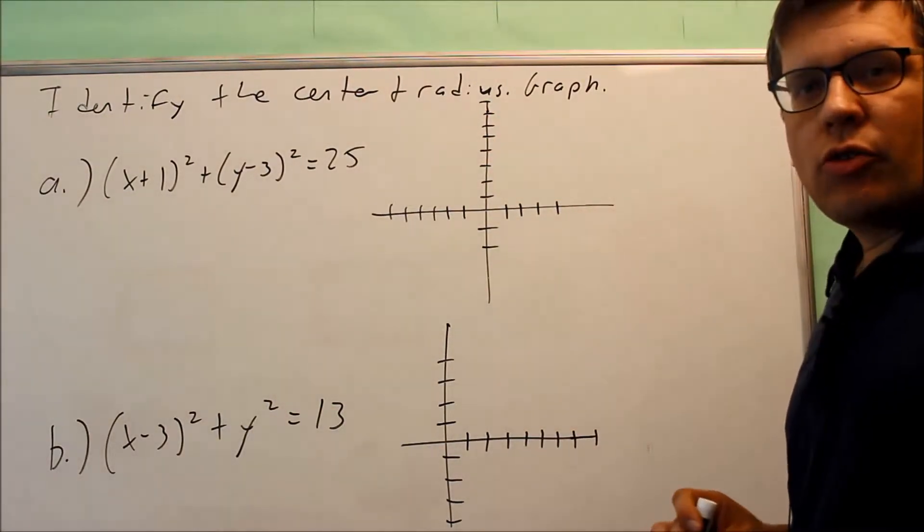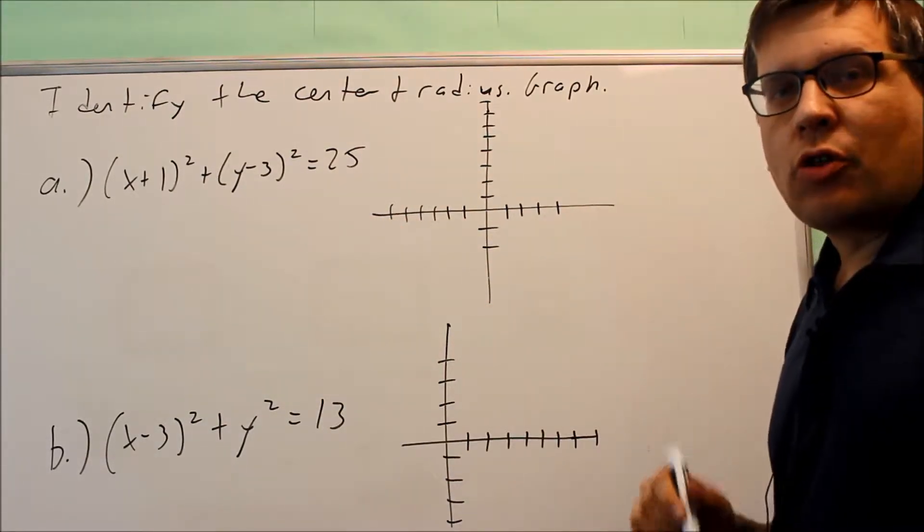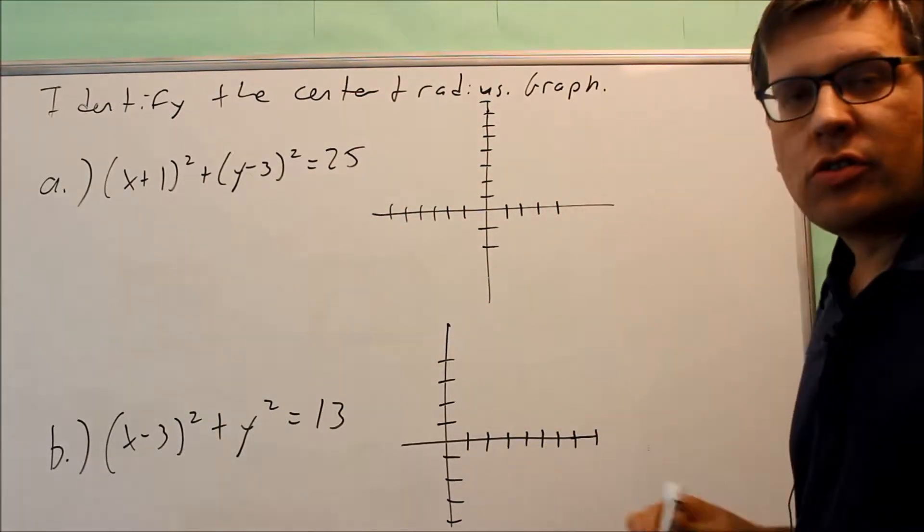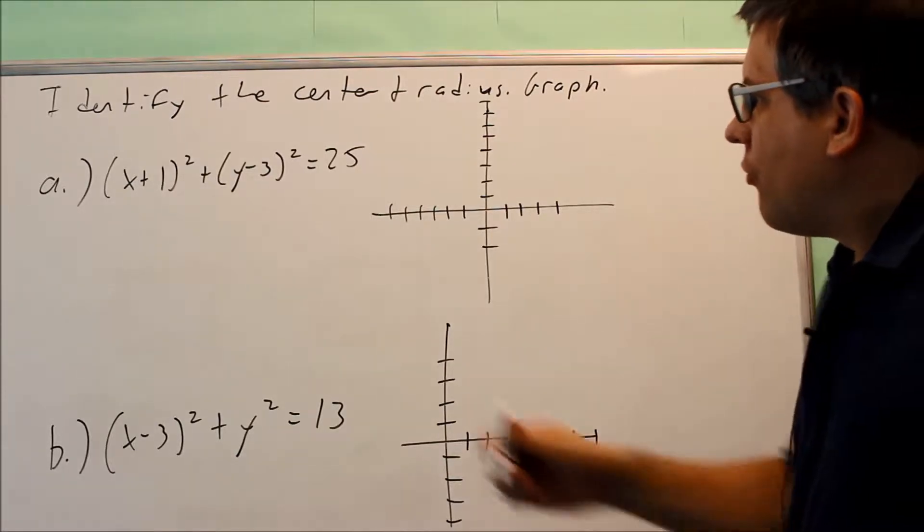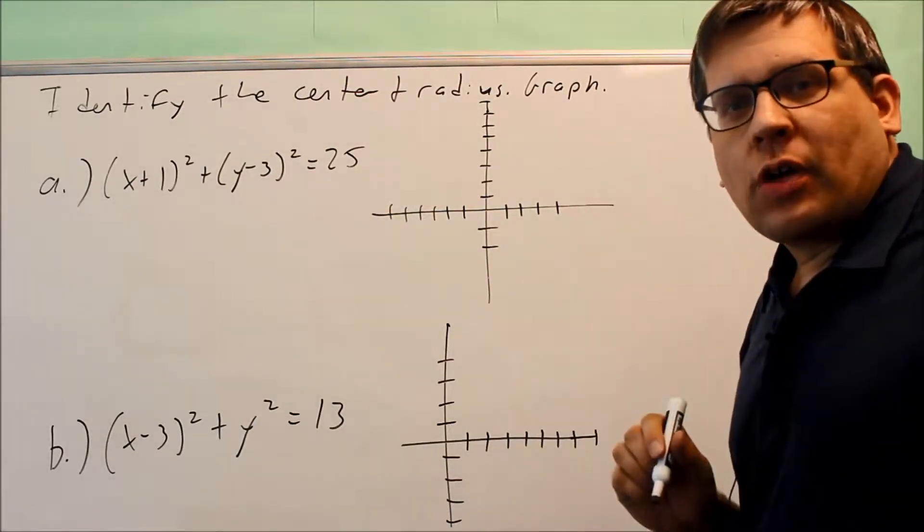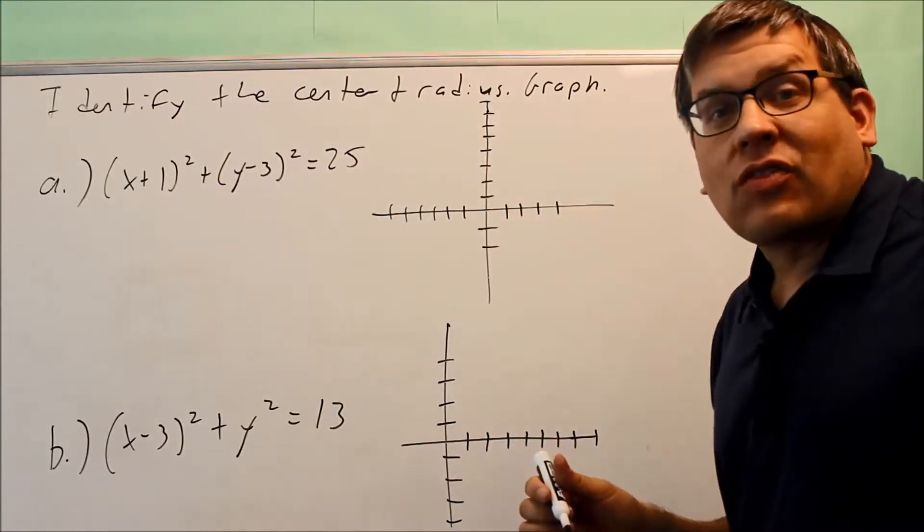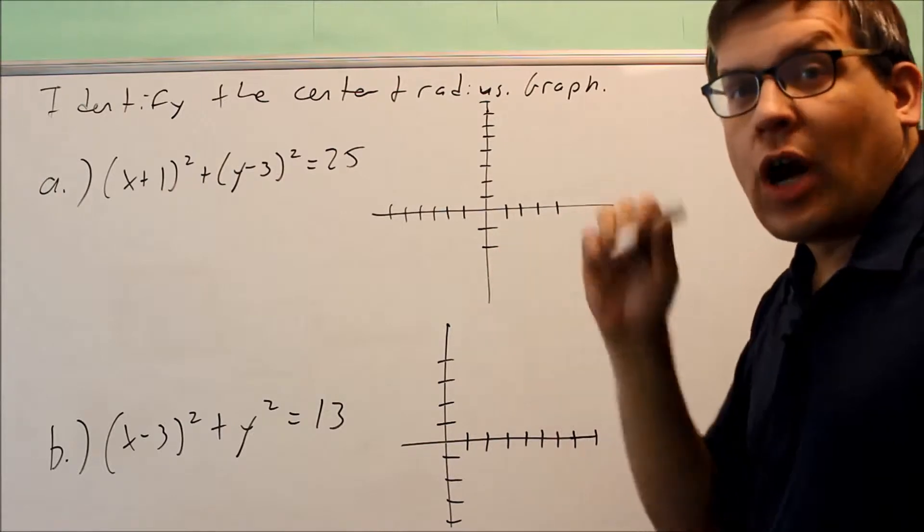Okay, now they want us to find the center and radius. This time they give us the equation, but now we want to find what the center and the radius is, and once again we're going to make the graph. For this one, what you need to do is get it into the same form as a standard form equation of a circle. In other words, I have to have x minus something and y minus something.